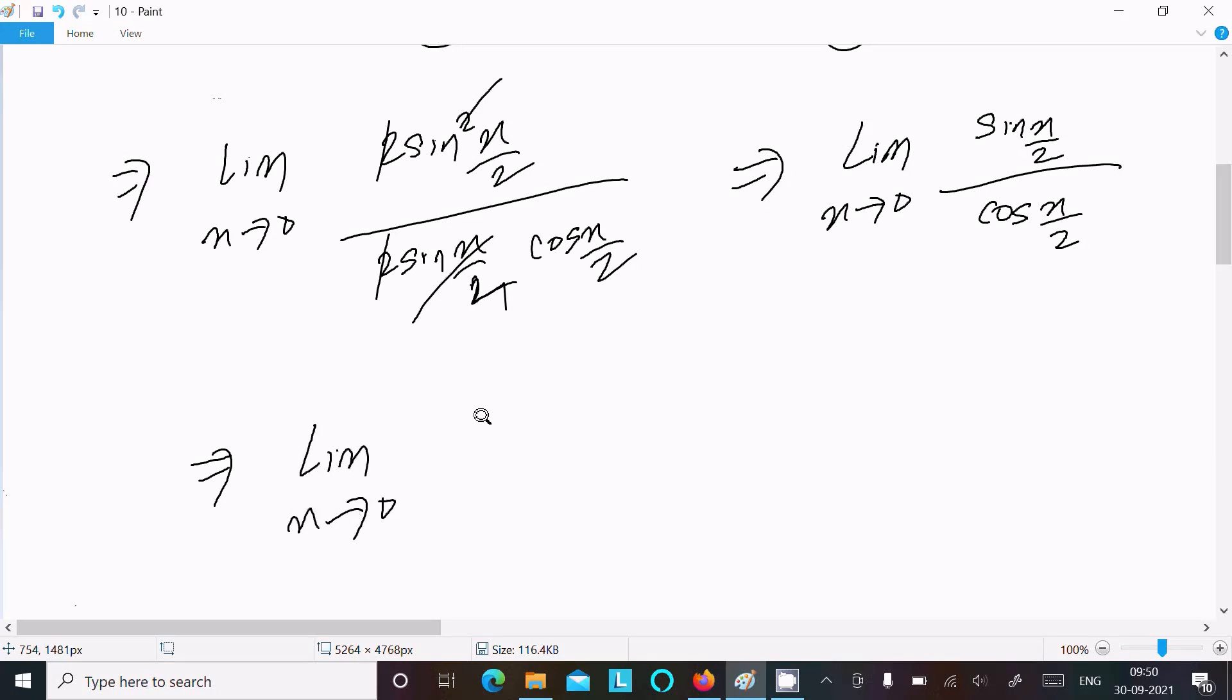Sin(x/2) divided by cos(x/2) equals tan(x/2).